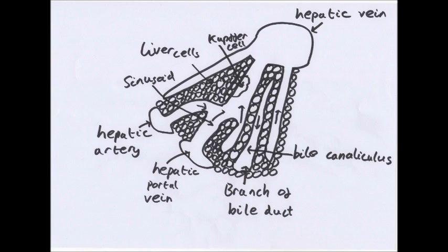Liver cells are quite unspecialised and simple, but take part in lots of metabolic processes. Since they carry out many reactions, they have lots of mitochondria, very dense cytoplasm, and lots of different organelles such as Golgi apparatus and endoplasmic reticulum. There is also another type of cell — the Kupffer cell. These break down pathogens and destroy old or damaged red blood cells. Kupffer cells are a type of macrophage. That's what you need to know about the structure of the liver.